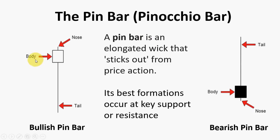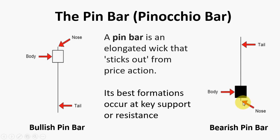So here we have the body, here is the nose, and here is the tail. Usually we like the tail to be twice as long as the body. So this is the bullish pin bar and here is the bearish pin bar. This is the tail, the body, and the nose should be as short as possible. Preferably we want the tail to be at least double the length of the candle body.